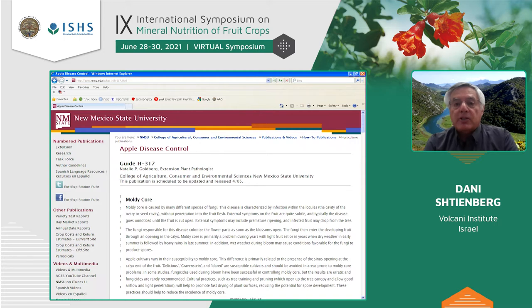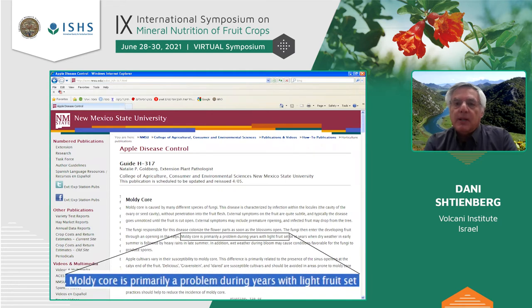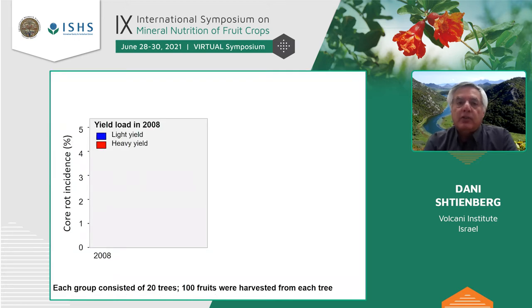Not much is known about the causes for this variation. A website from New Mexico State University may be a hint — what's written there is that moldy core is primarily a problem during years with light fruit set. They did not present any experimental evidence or explanation. We decided to check if this is also true for core rot.